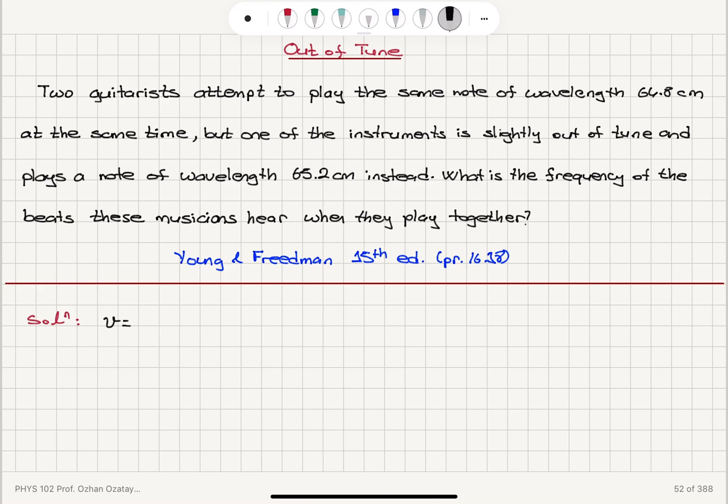is equal to lambda 1 times F1. So we have the first wavelength 64.8 cm, 0.648 m times F1. And it's also equal to lambda 2 times F2, which is the new wavelength 0.652 m times F2.